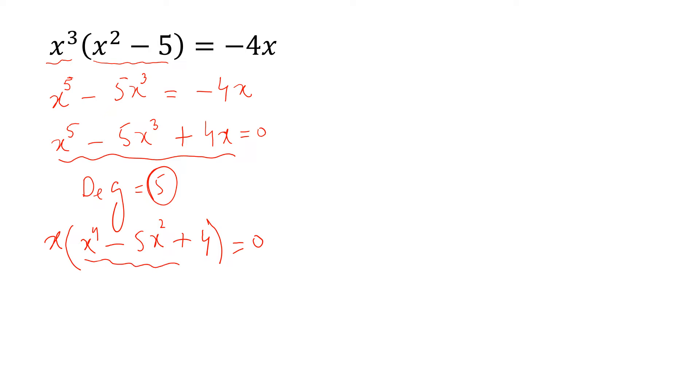Now, we can factorize this and we can write it x into x power 4 minus 4x square minus x square plus 4 is equal to 0.